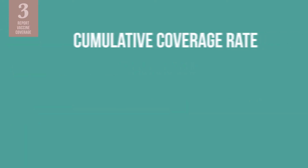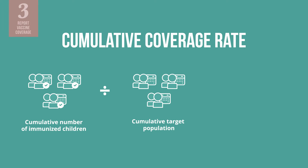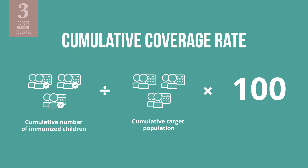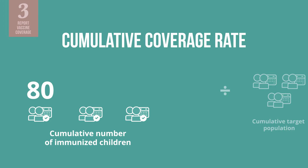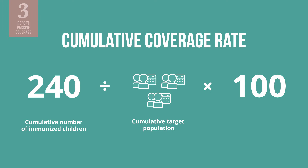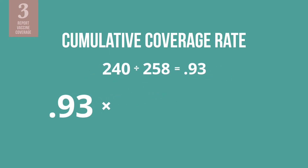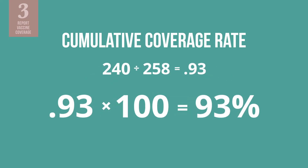For the cumulative coverage rate of any vaccine dose, take the cumulative number of infants immunized with that vaccine dose and divide it by the cumulative target population. Multiply the total by 100 to find the cumulative coverage rate. For example, let us say that 80 children were immunized in March with pentavalent 1, 82 in February, and 78 in January, for a cumulative total of 240 immunized children. Divide 240 by the cumulative target population for March, which is 258, then multiply the answer by 100 to find the cumulative pentavalent 1 coverage rate.